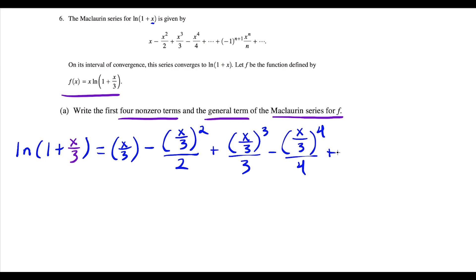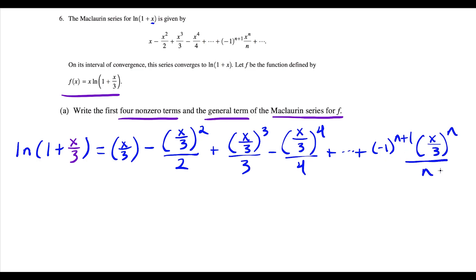And now the general term — we could just do the same algebra. We have negative 1 to the n plus 1, but instead of x to the n, we're replacing that x with x over 3 and raising all of this to the n power, and then this is divided by n. And then dot dot dot — this will just keep going on forever.